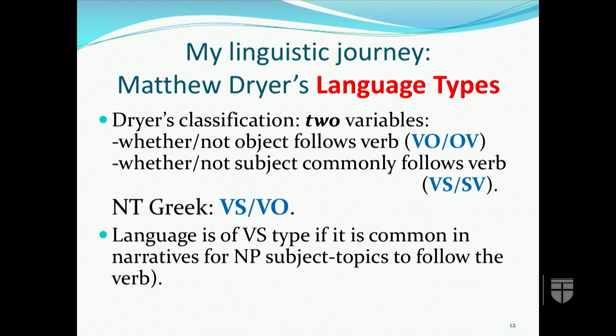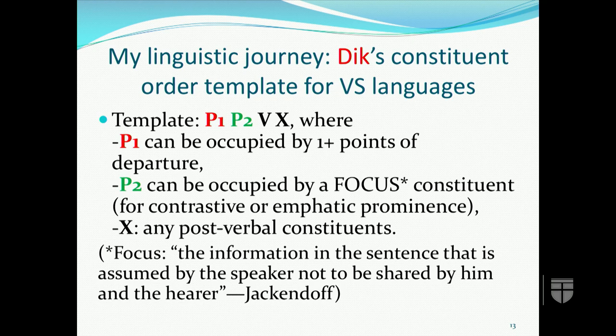In a VS-type language, it is common in narratives for the noun phrase in topic-comment sentences to follow the verb, which you'd be familiar with in Greek. A number of discourse features tend to correlate with Dreyer's variables, one of them being Simon Deak's constituent order template for VS languages. Deak's template was originally proposed for Hungarian, but is equally applicable to ancient Hebrew and New Testament Greek based on that VS characteristic.